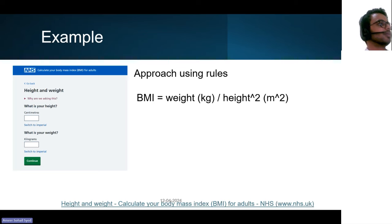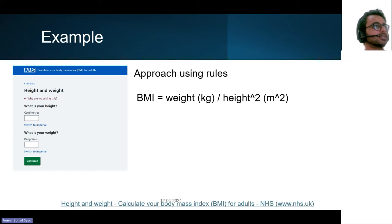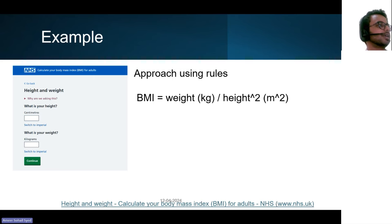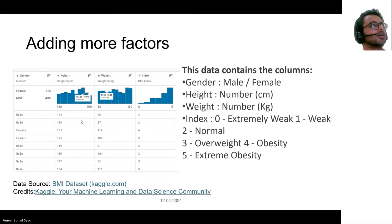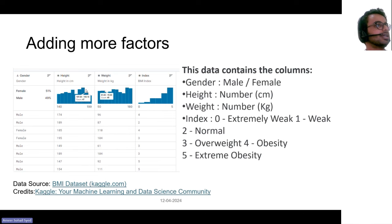Here's a website I sometimes visit — a simple BMI prediction tool. You enter your height and weight and get your BMI, your body mass index. There's a formula that depends on weight and height, and when you enter it and click continue, some calculation happens behind the scenes and it comes back with an answer. Now here's another dataset with height, weight, and BMI — with an index where zero means extremely weak, one means weak, two normal, three overweight, four obesity, and five extreme obesity, plus a gender column.